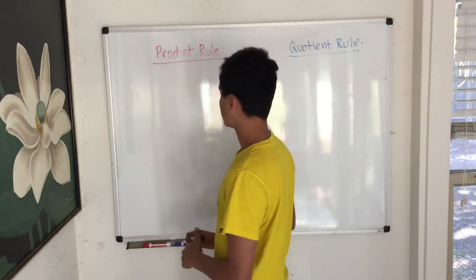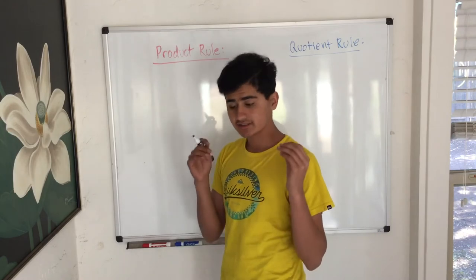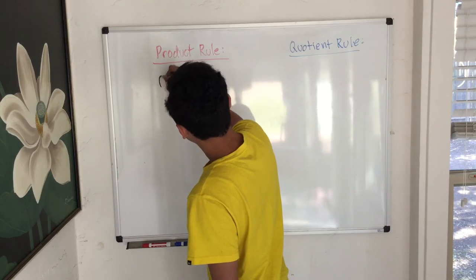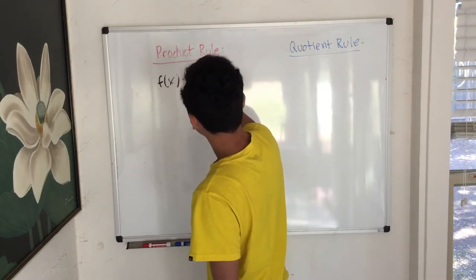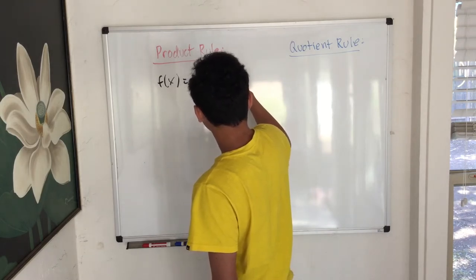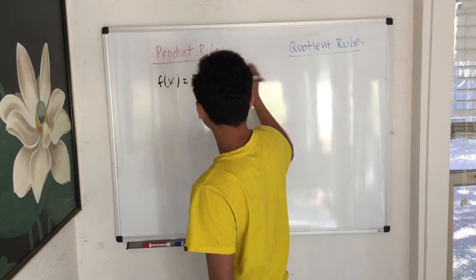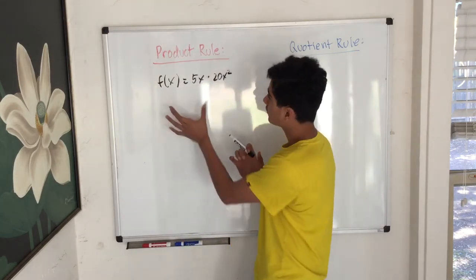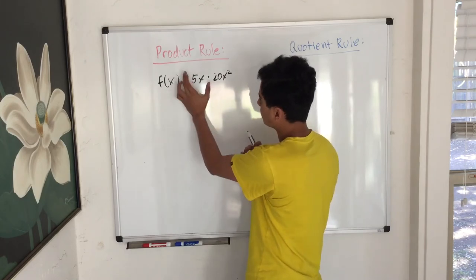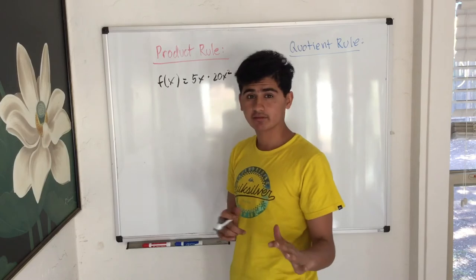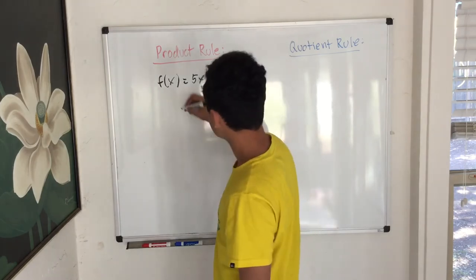Starting off with the product rule. The product rule, as you can think about, has something to do with multiplying. So let's go over here with an idea of f(x) equals 5x times 20x². And let's say we want to find the derivative of it. Now, before you know the product rule, you guys are just going to think you're going to take the derivative of 5x, take the derivative of 20x² separately, multiply them together, but that's not how you do it. That'll get you an incorrect answer.